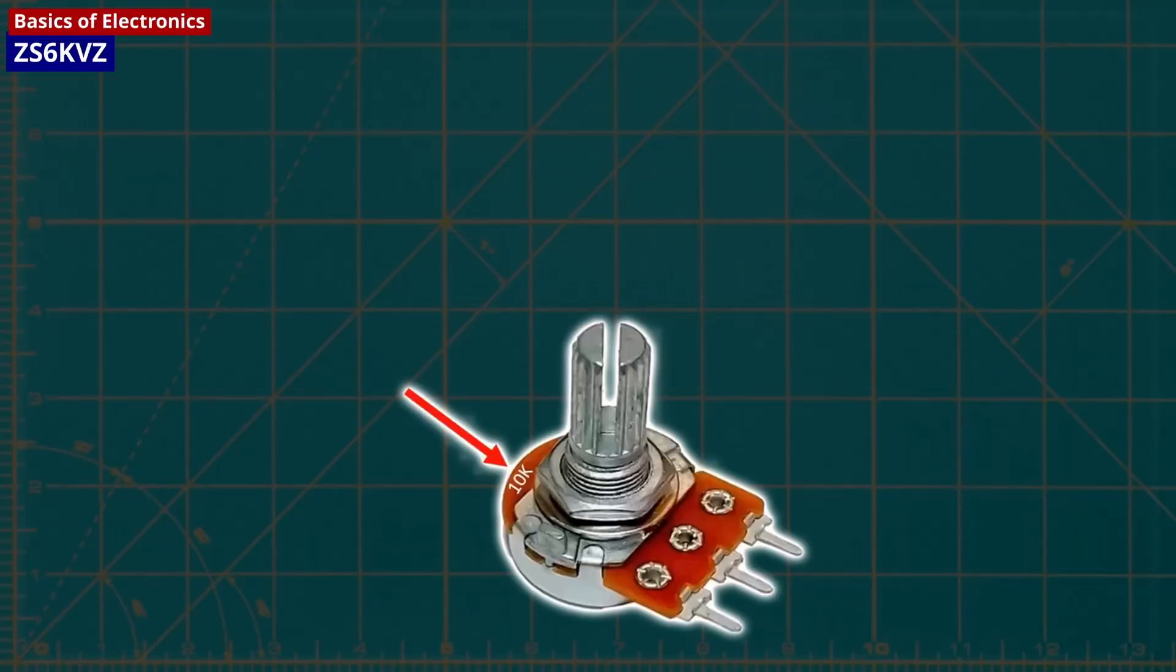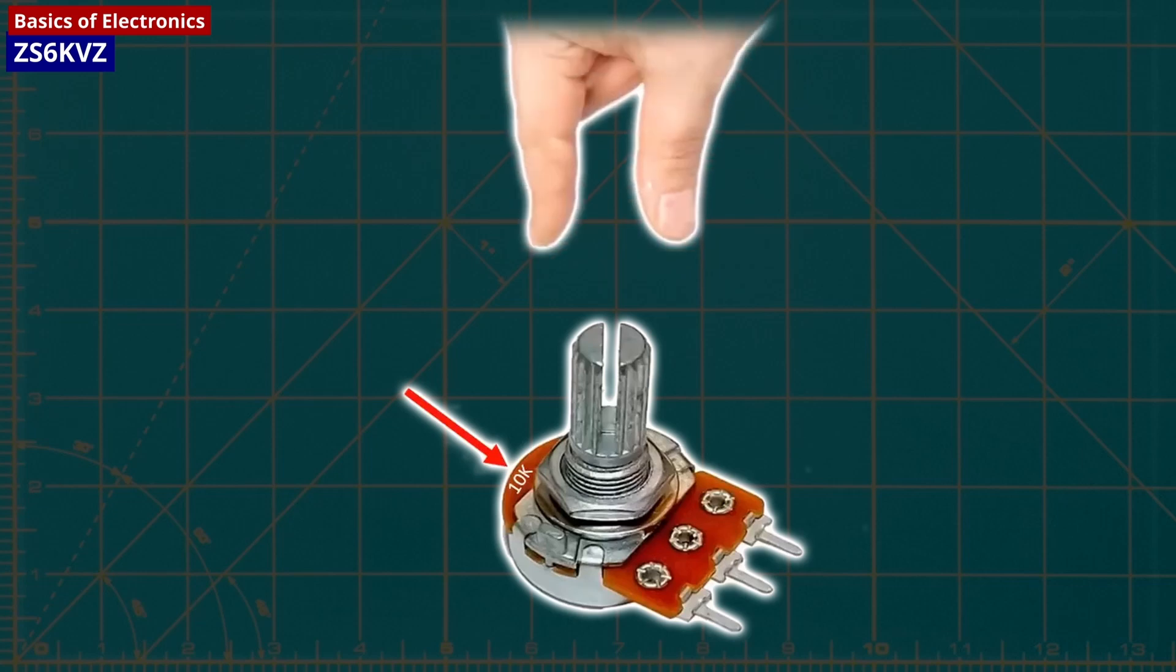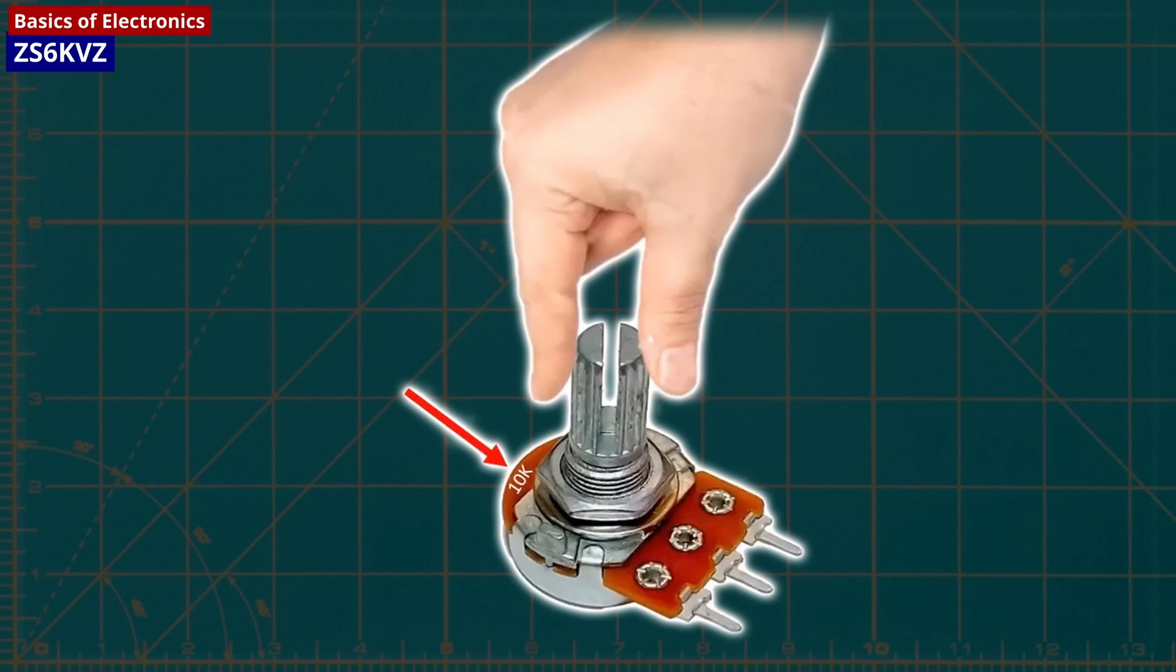Potentiometers are devices used in circuits to change the resistance, and they are considered variable resistors. They are controlled through a knob or slider that is turned or pushed to modify the resistance in a circuit.